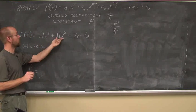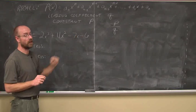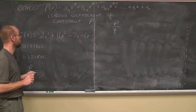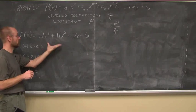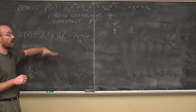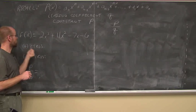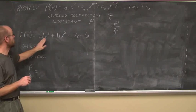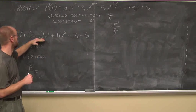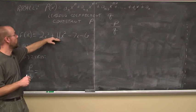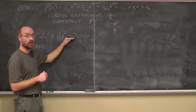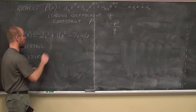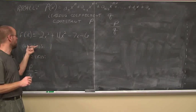f(x) = 2x³ + 11x² - 7x - 6. We may recall this from the previous video. We're going to apply a different way to look at it. Using Descartes' Rule of Signs, the coefficients go positive, positive, then change to negative — so there's one change in sign. I am looking for one positive real zero.